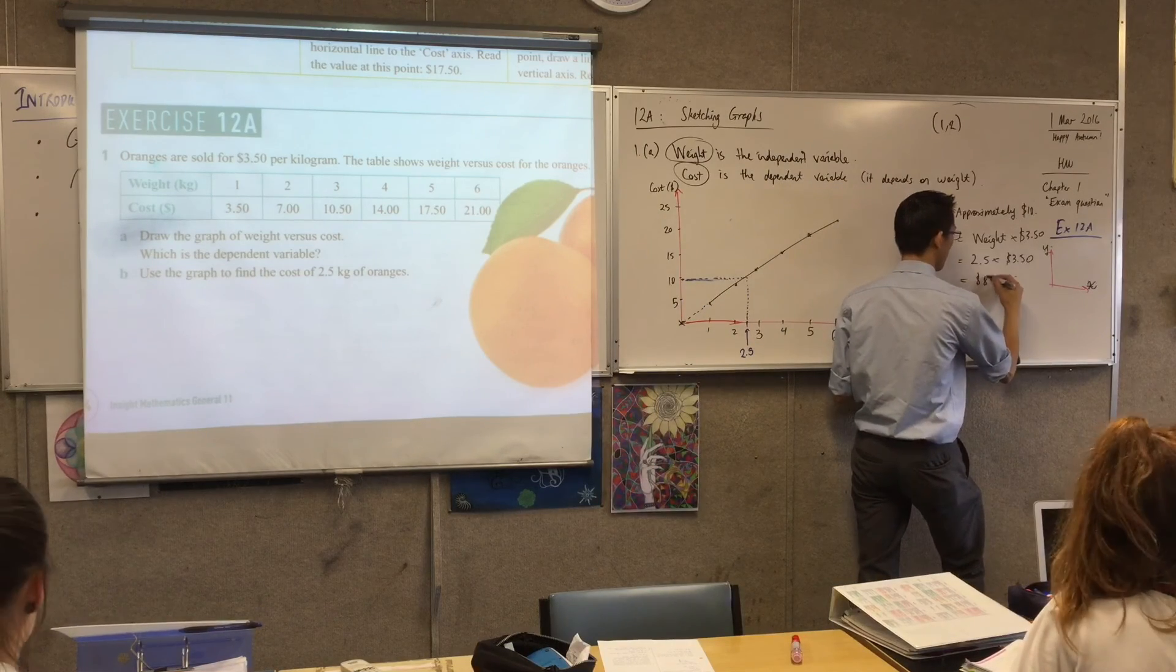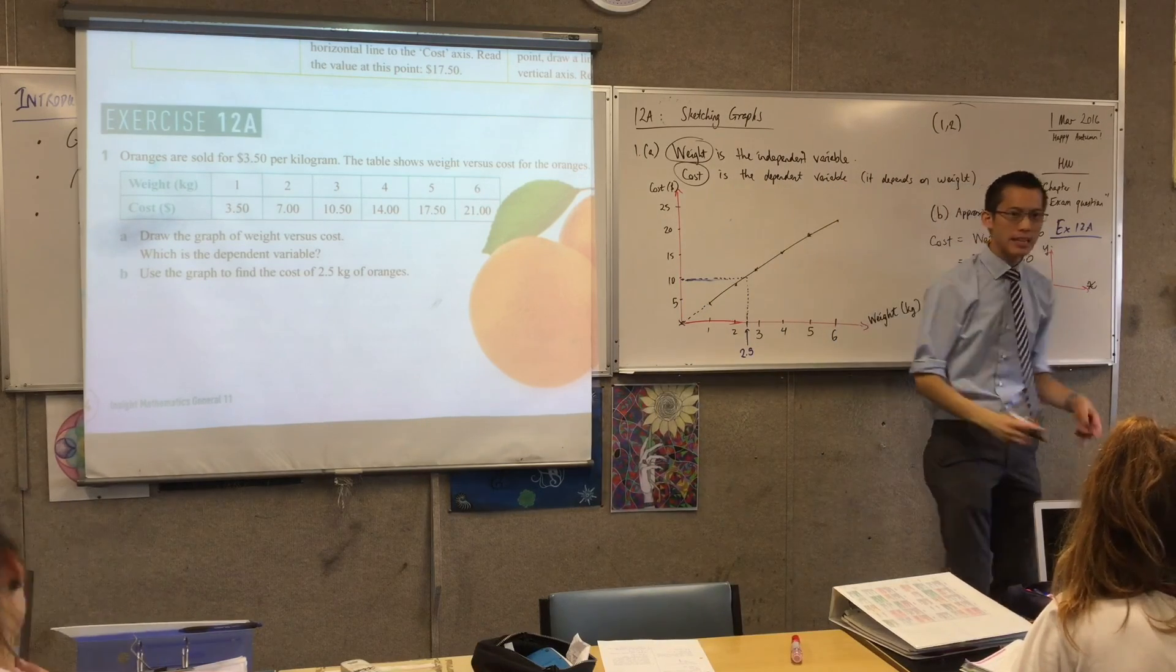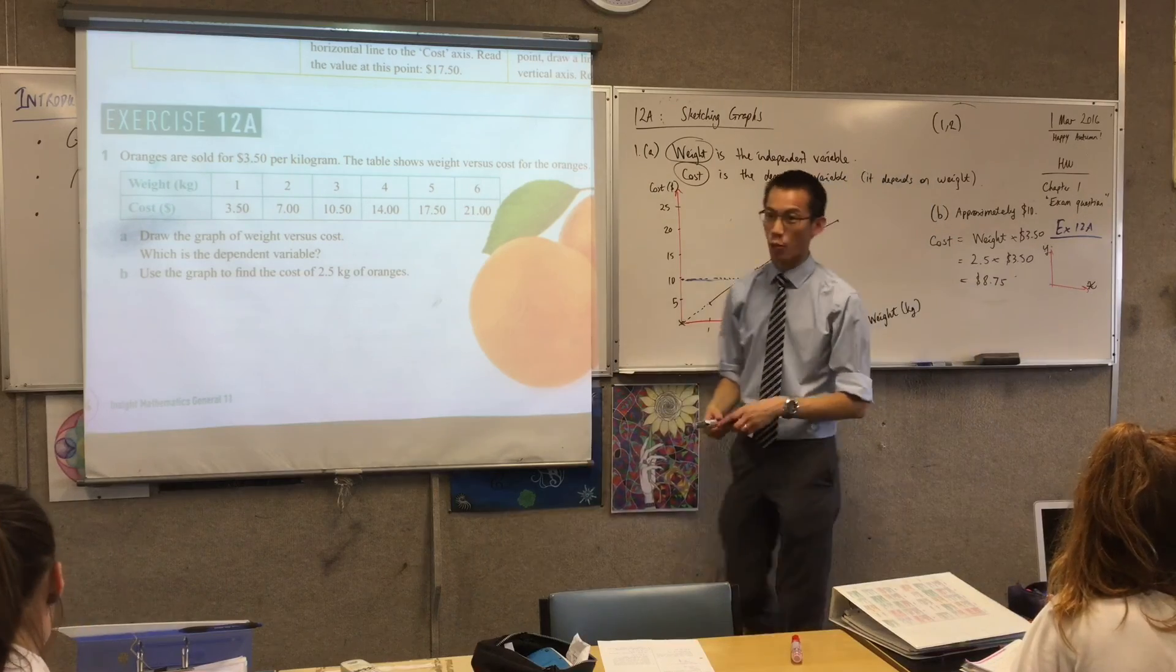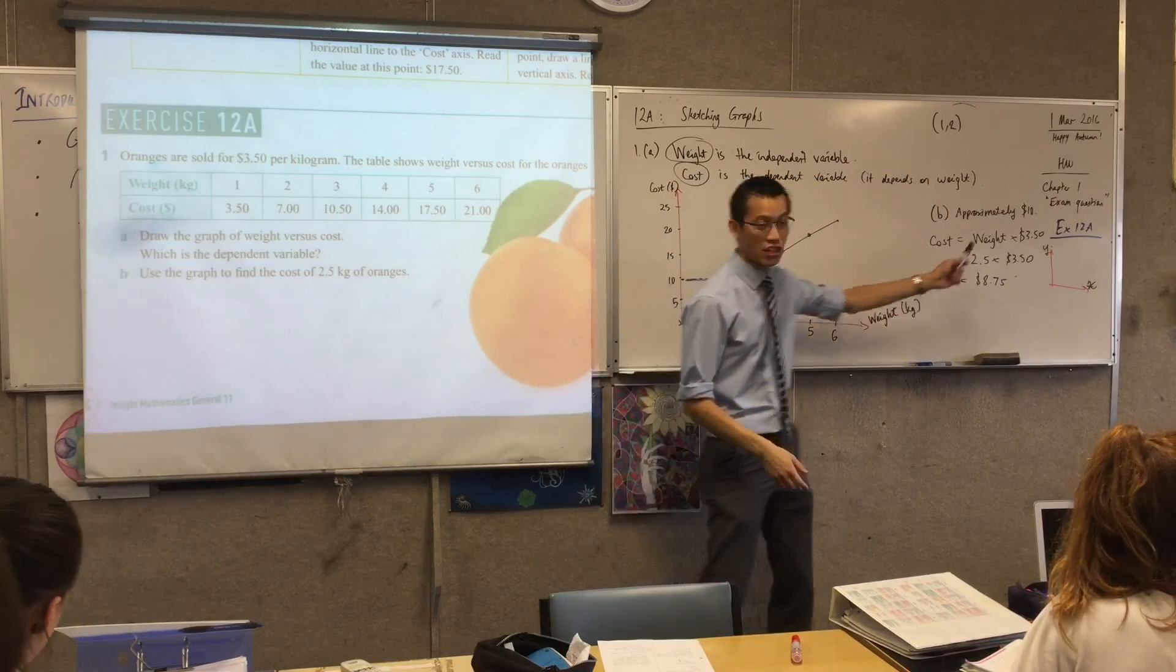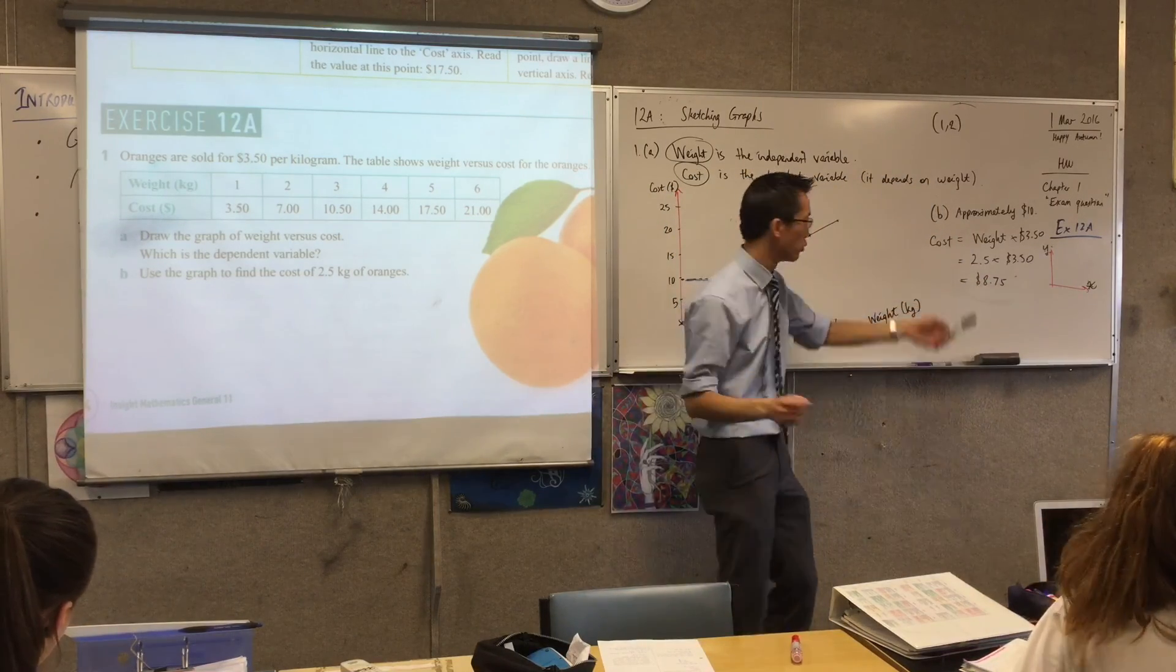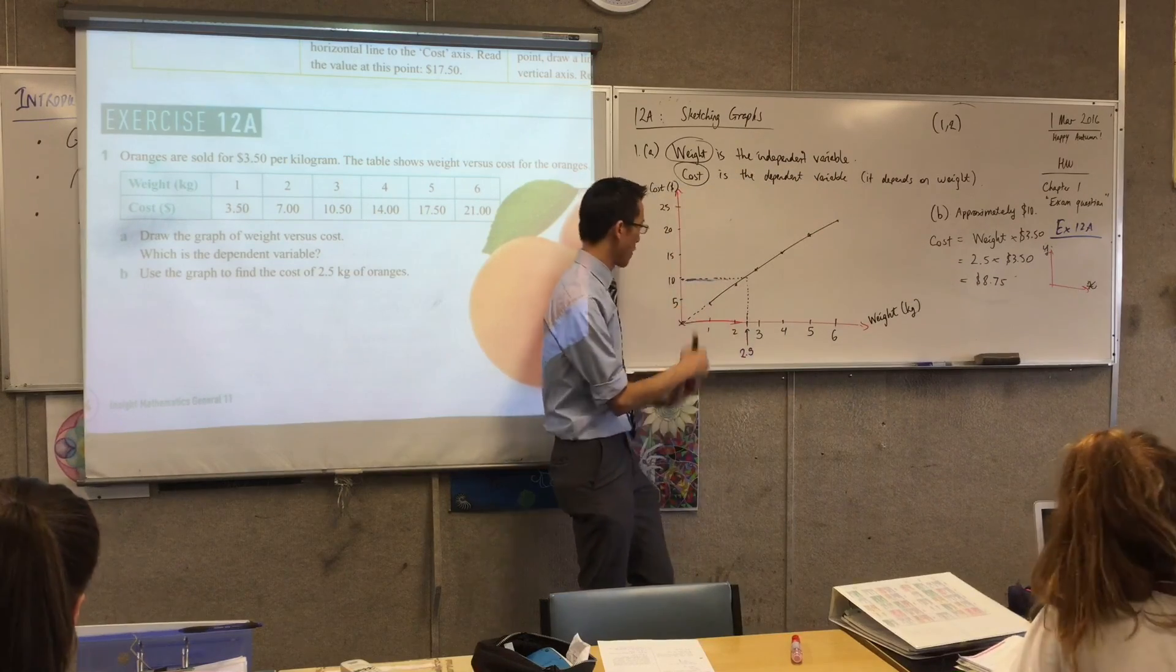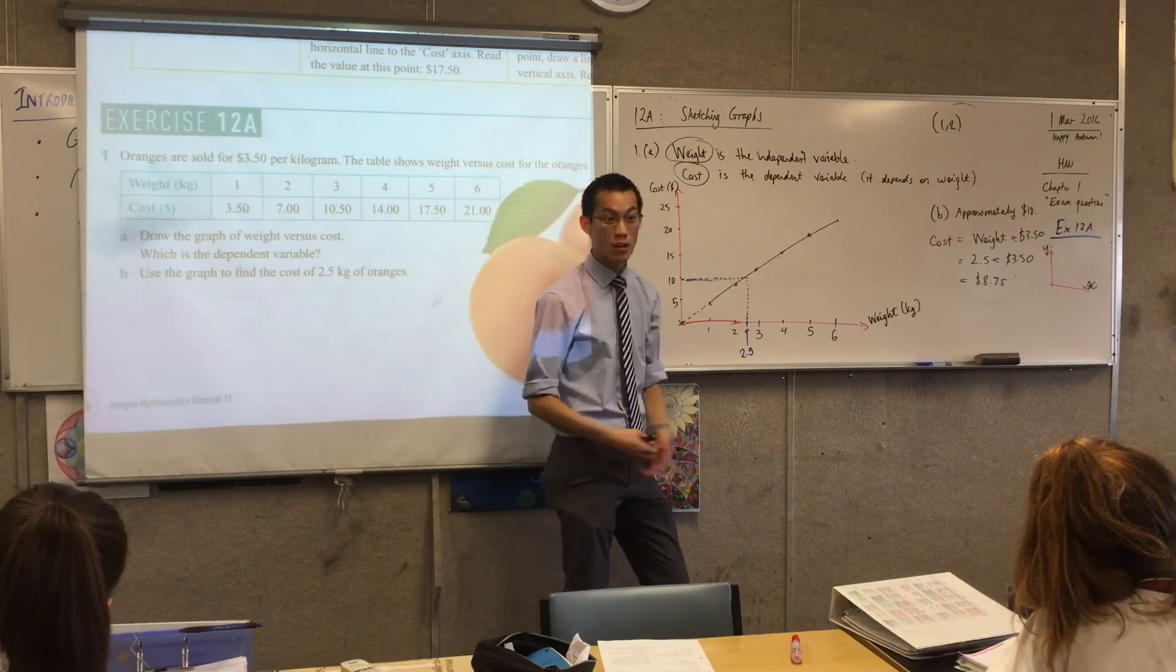8.75. 8.75. So this is an algebraic way. This is why we started without the graphs. We started with just the numbers first. Because they're a powerful tool, and they can help you check if you're getting it right. I guess my under-10 was just in the right ballpark.